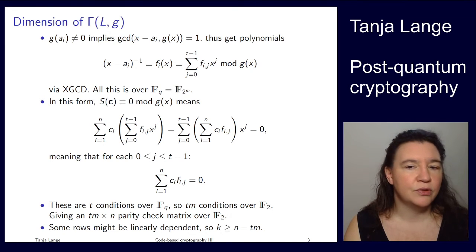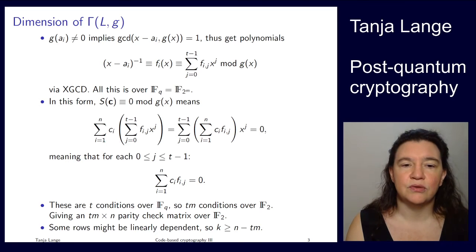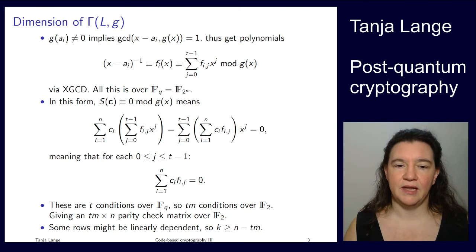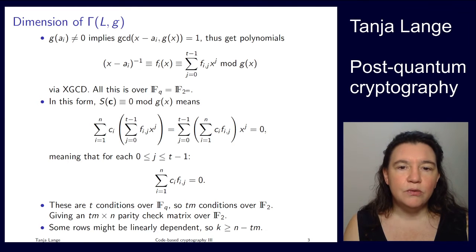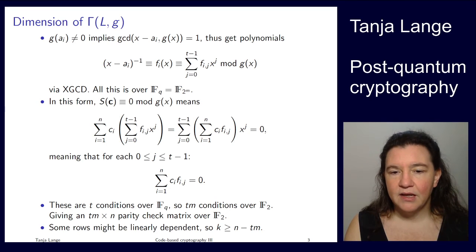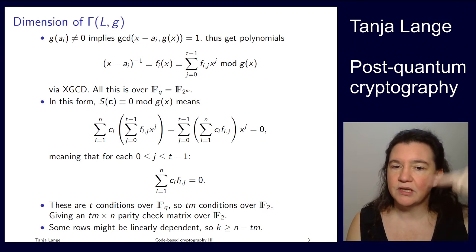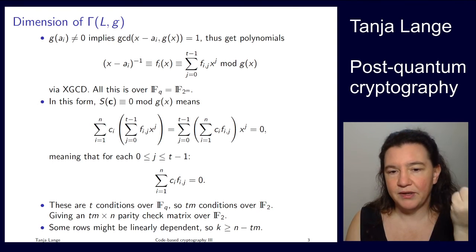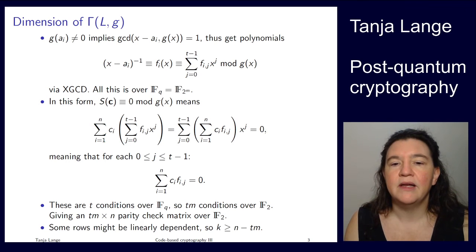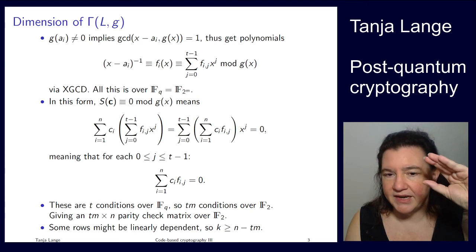Okay, so that means we have t times m conditions over F2. And when you think about the parity check matrix, that's exactly how we define our parity check matrix. So there are tm conditions, each of which involve n variables. So the dimensions of this parity check matrix would be height, t times m, and width n. Now just looking at this, we don't know whether this is possibly redundant. So there might be some of those rows that are linearly dependent. So we only get a lower bound on the dimension. The dimension might be higher. But it cannot be worse than n minus t times m, because that's what the dimensions. Remember that the parity check matrix has n minus k rows. So if you flip things over, then k is n minus t times m. And as I said, the dimension might be larger. So some of those rows might actually be linearly dependent.